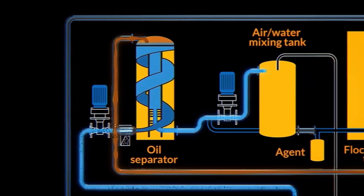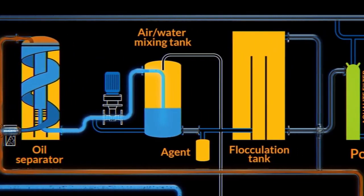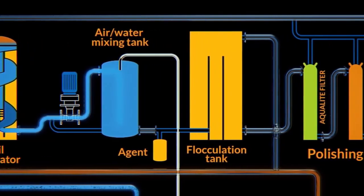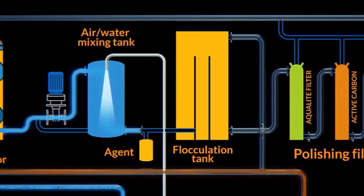After the oil separator, the bilge water goes through a circulation pump and into an aeration chamber where the water will be mixed with air.